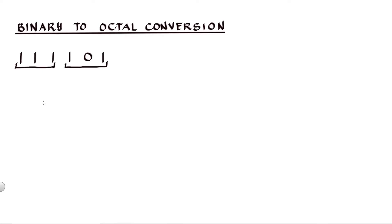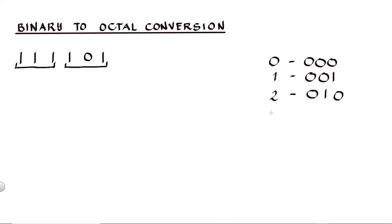Because each octal value is represented by three binary digits. For example, octal 0 is represented as 000. Octal 1 is represented as 001. Octal 2 is represented as 010. Octal 3 is represented as 011. Octal 4 is represented as 100. And so on.